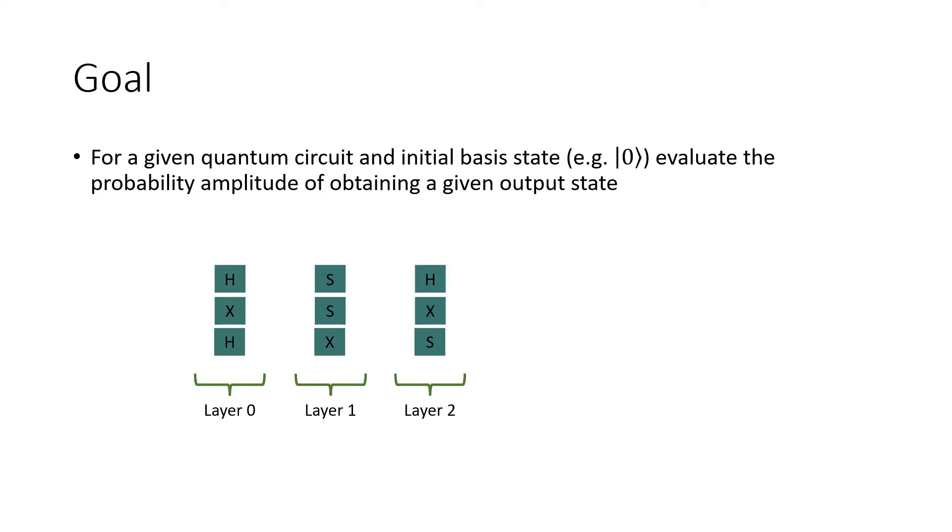The goal of this simulator is to evaluate the probability amplitude of obtaining a given output state given a circuit and an initial basis state. In this example we will use a quantum circuit with depth 3 and 3 qubits. The initial state is 0 0 0 and the output state is 1 0 1.